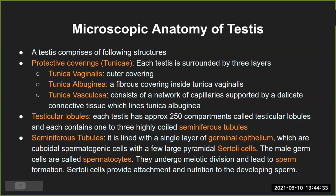The germinal epithelium cells are cuboidal in shape and are also called spermatogenic cells because they give rise to sperm — they are the precursor cells from which sperm are formed. Between the germinal epithelium cells are a few large pyramidal-shaped cells called Sertoli cells. So inside the seminiferous tubules there are two types of cells: the inner lining is the germinal epithelium, and in between are the pyramidal Sertoli cells.